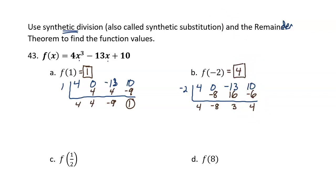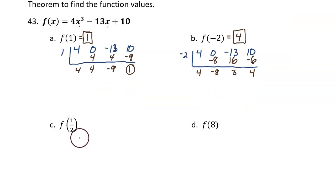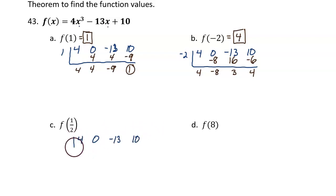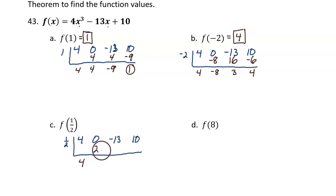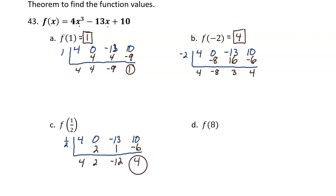Now question C. Coefficients: 4, 0, negative 13, and 10. This time we're dividing in a half. Bring down 4. 4 times a half is 2; add: 2. 2 times a half makes 1; add: negative 12. Negative 12 times a half is negative 6; add: 4. The remainder is 4, therefore f of 1 half equals 4.